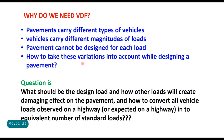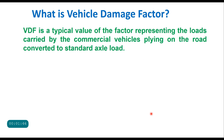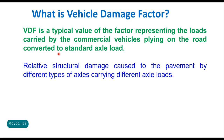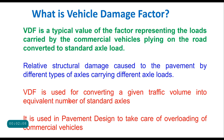The question is: what should be the design load, and how do other loads create a damaging effect on the pavement? How do we convert all vehicle loads observed on a highway — or expected on a highway in the case of a new road — into an equivalent number of standard loads? By definition, vehicle damage factor is a factor representing the loads carried by commercial vehicles on the road converted to standard axle load. It is the relative structural damage caused to the pavement by different types of axles carrying different axle loads, and is used for converting a given traffic volume into an equivalent number of standard axles.